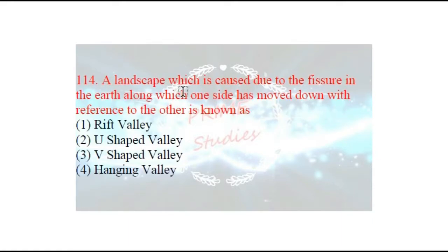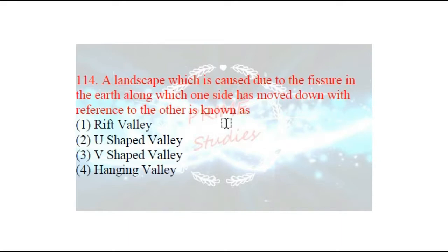Next question: a landscape which is caused due to a fissure in the earth, along which one side has moved down with reference to the other, is known as what? Jo sthalakruti prithvi ke upar drararon ke karan utpann hoti hai, jisme ek side niche ki taraf dhas jaati hai aur doosari upar ki taraf uth jaati hai — usko hum bolte hain rift valley.